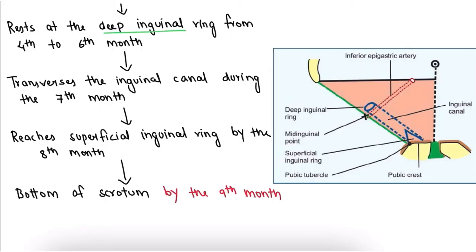After reaching the iliac fossa, it would reach the deep inguinal ring and rest there from the fourth to the sixth month of intrauterine life. You can see this image for better understanding. After that, it would traverse the inguinal canal during the seventh month of intrauterine life.